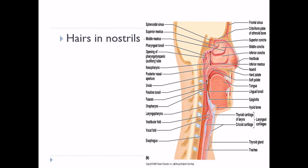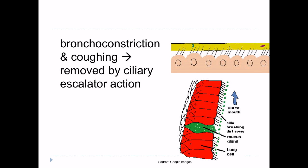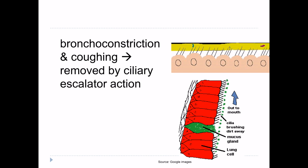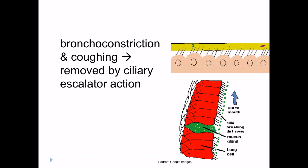Particles more than 6 micrometers in diameter are removed by our nasal turbulence mechanism. Particles 1 to 6 micrometers in diameter are settled in the small bronchioles due to gravitational precipitation. For example, terminal bronchiolar disease is common in coal miners because of these dust particles which settle in the terminal bronchioles.